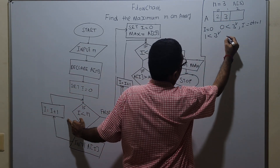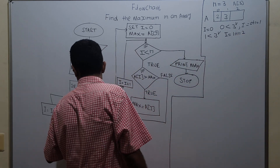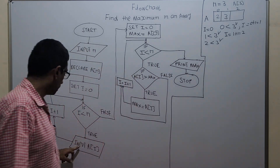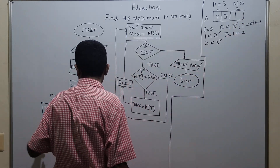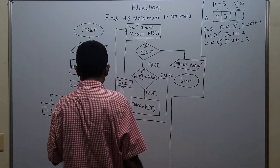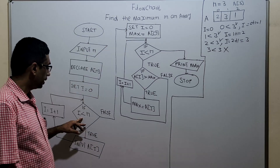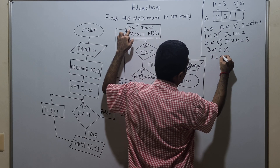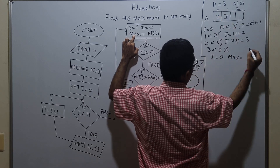Incrementing i by 1: i equals 1 plus 1 which is 2. Now check i less than n: 2 less than 3, which is true. Input a of 2: I am assigning a value 1. Then i equal to 2 plus 1 which equals 3. Now 3 less than 3 is false, so we exit this loop and come to the next section.